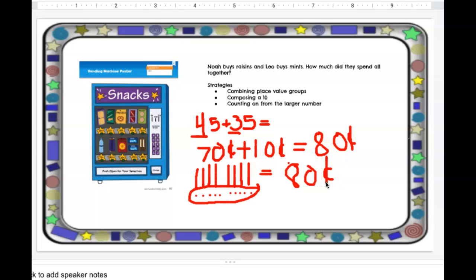And then, of course, there's the strategy of counting on from a larger number. Starting at that 45 and counting on in our 100 grid. Going down to 55, 65, 75. Down three hops.